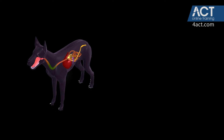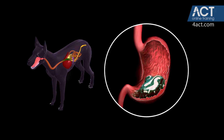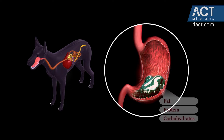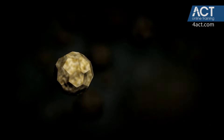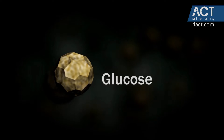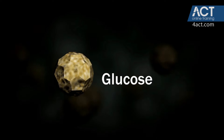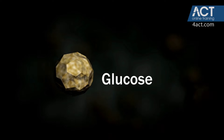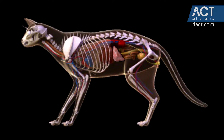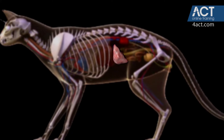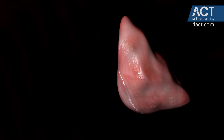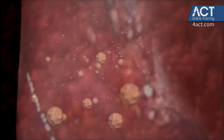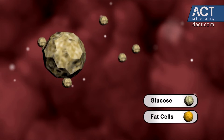When an animal ingests a meal, most of the nutrients are broken down into a simple sugar in the digestive tract. This sugar, called glucose, is absorbed and circulated throughout the bloodstream to produce instant energy to cells and organs, including the heart and brain. A surplus of glucose is converted by the liver into fat, which will be stored and utilized when food is scarce.